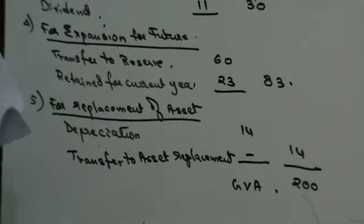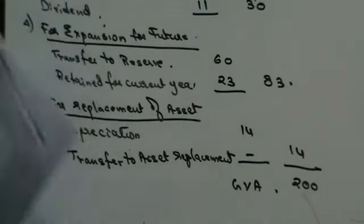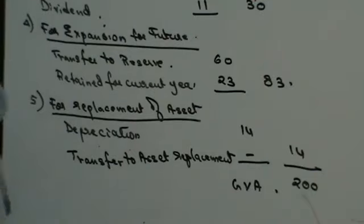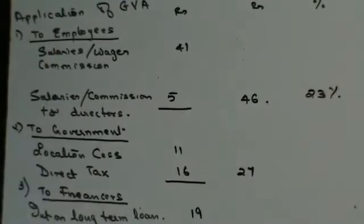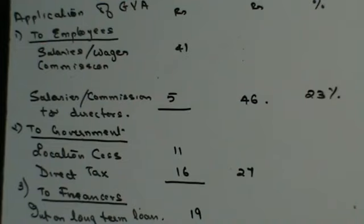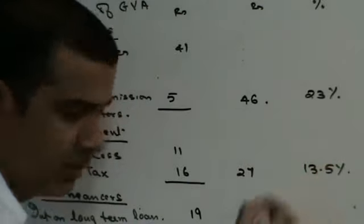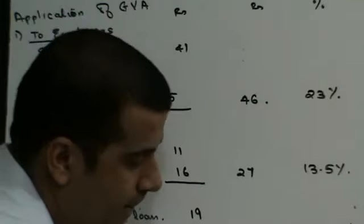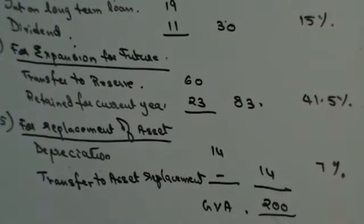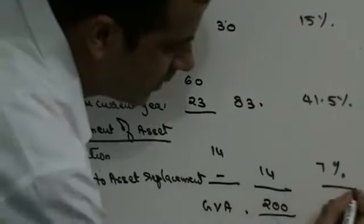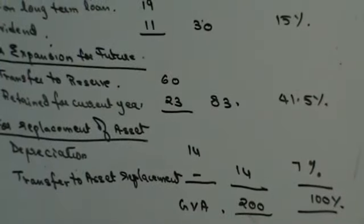Now let's get the percentages. Employees: 46 divided by 200 into 100 = 23 percent. Next: 13.5, then 15 — everything at 1.5. That's your entire GVA. This is how you make your GVA statement and the application of GVA.